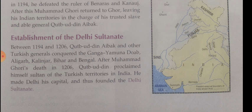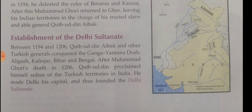Alauddin Khilji brought Gujarat, Malwa, several Rajasthan kingdoms, and the Deccan under his control. Muhammad bin Tughlaq shifted his capital to Daulatabad and then back to Delhi. His plan of conquering Central Asia, the Tibetan campaign, the taxation scheme in the Ganga-Yamuna doab, and his system of bronze coins all failed. Many provinces broke away because of these unwise policies.